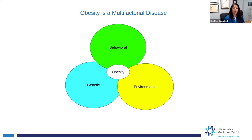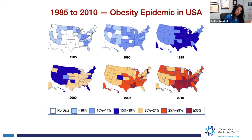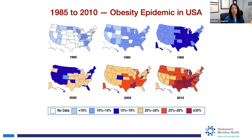So the only control we have of this multifactorial disease is our behavior. Over the last several decades, looking at what is going on in the US: there was not a lot of data back in 1985, but from 1990 going forward, the percent of patients considered obese in the US has climbed from about 14%.